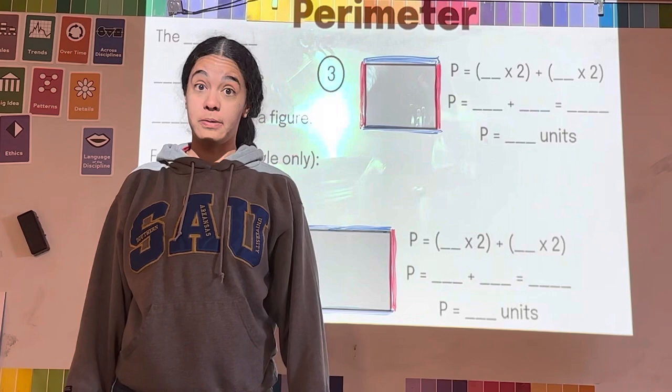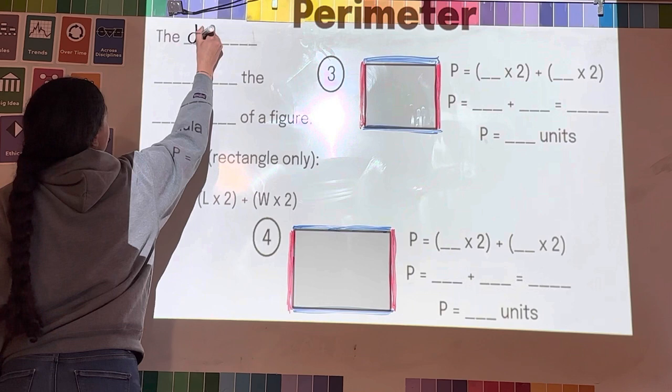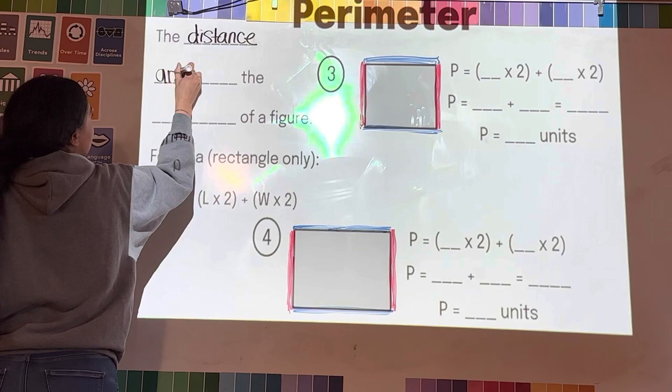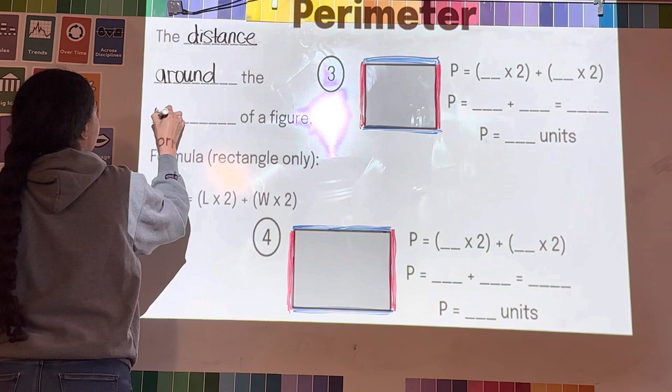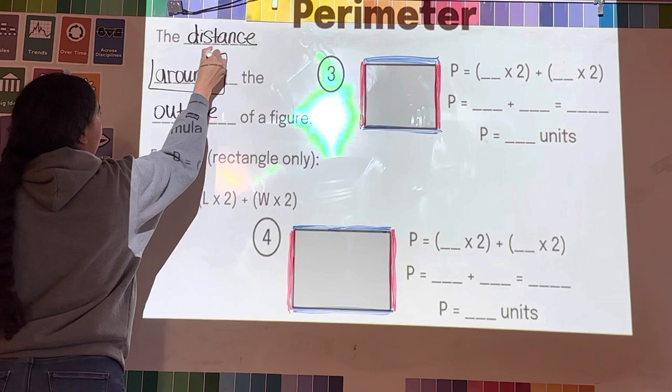Hey guys, welcome back. We're ready for part two of our lesson and we're going to go over perimeter. Okay, so perimeter is the distance around the outside of a figure.